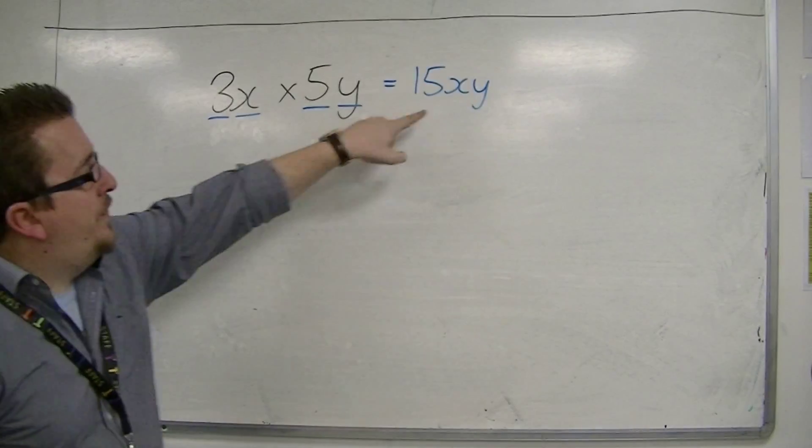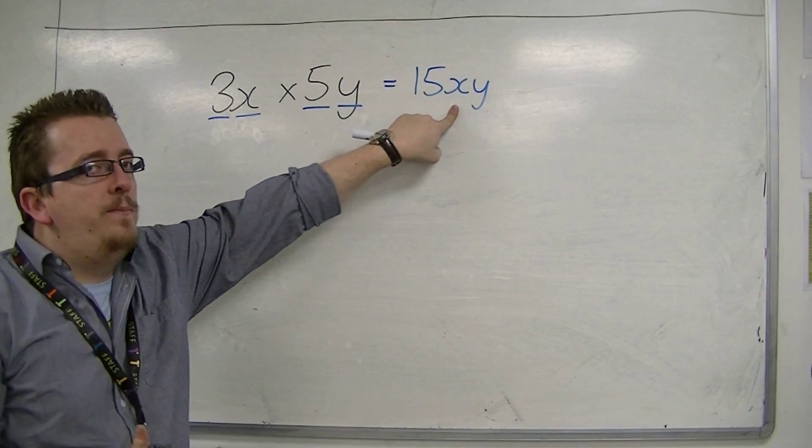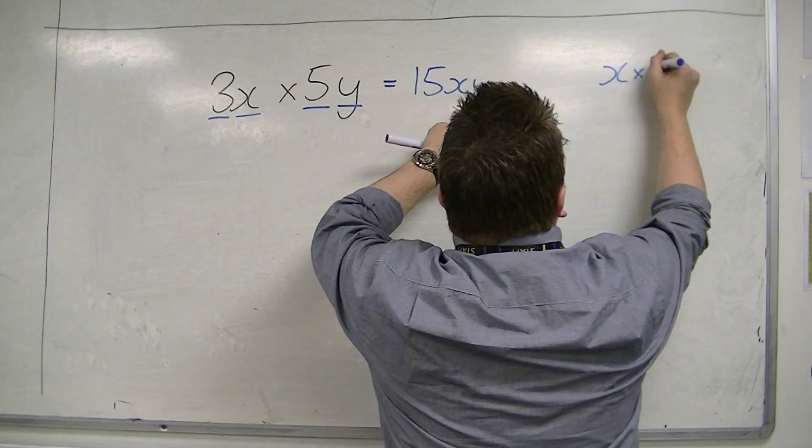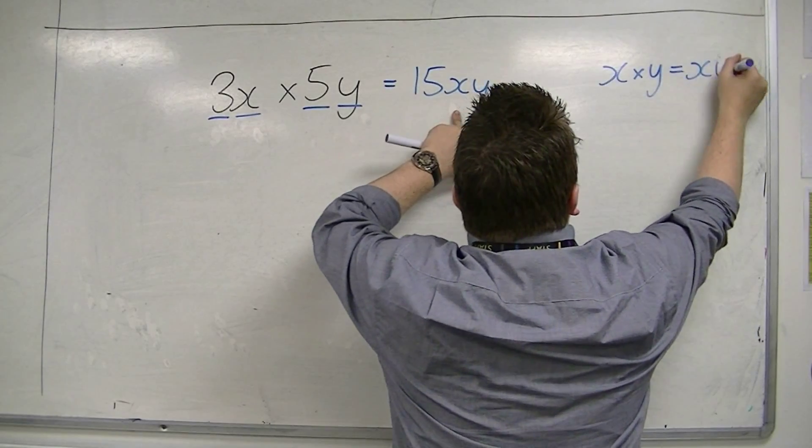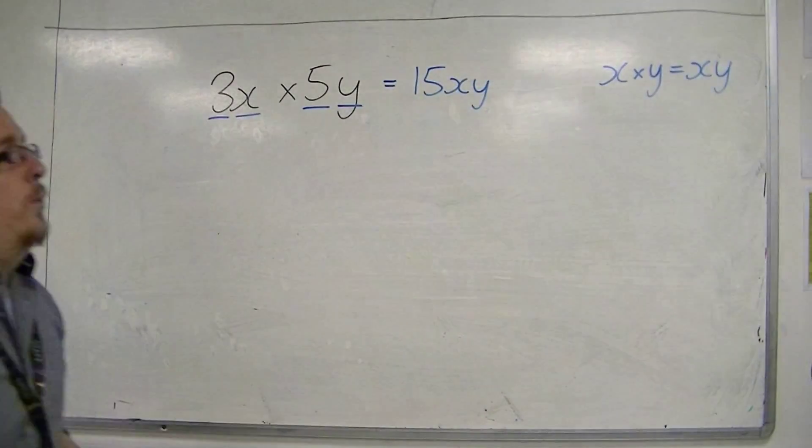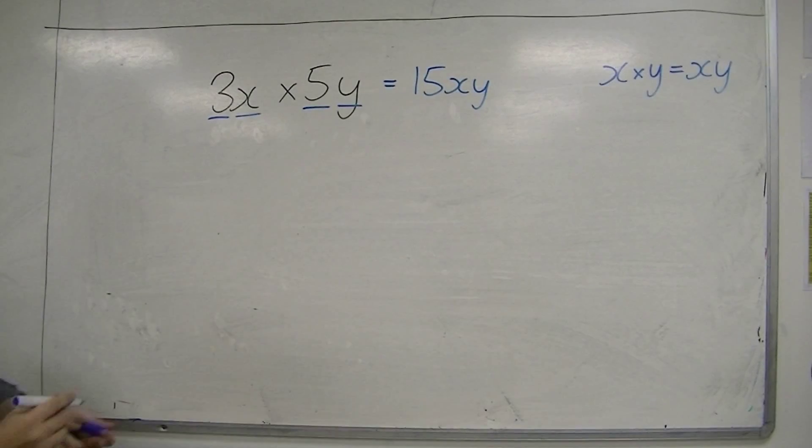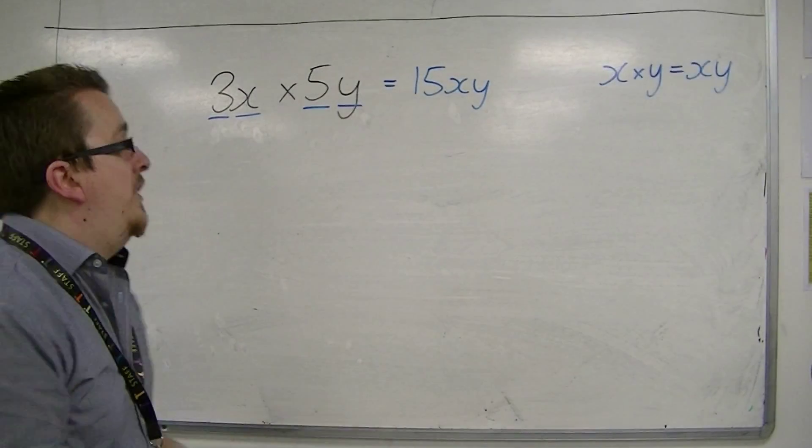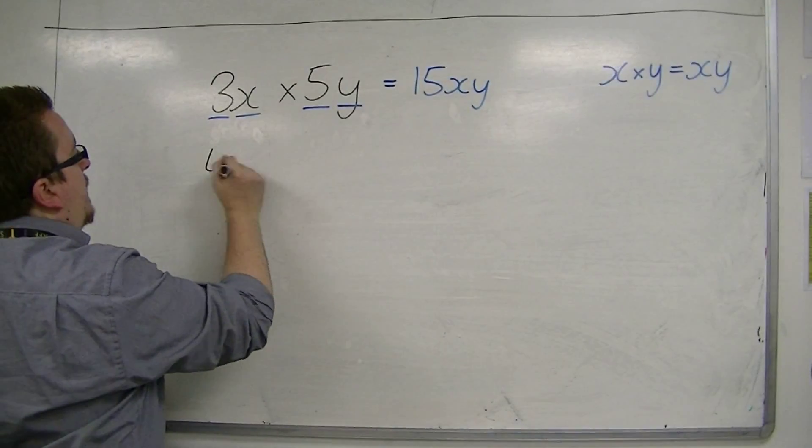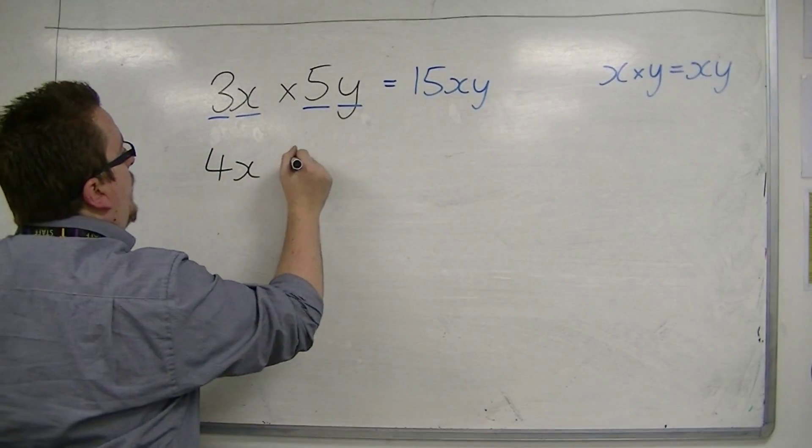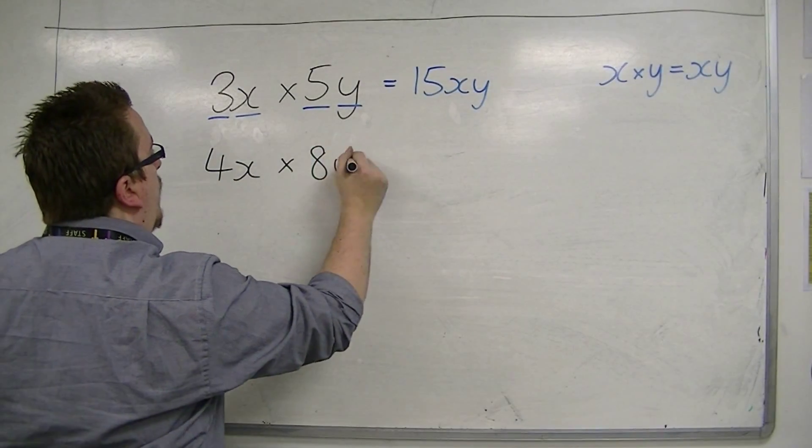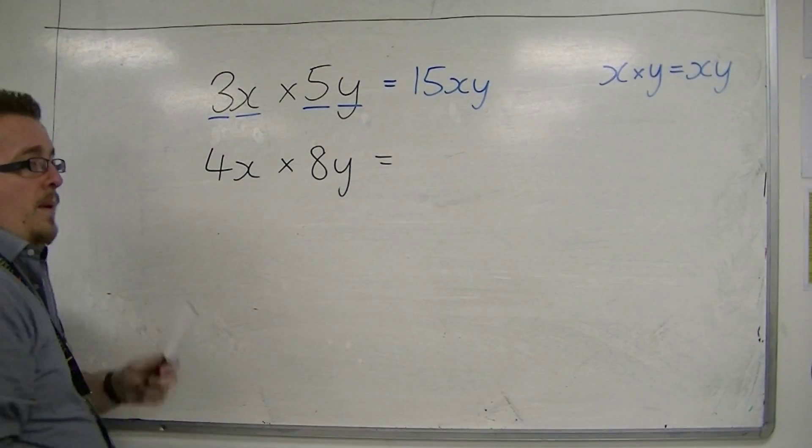And you can see that I don't bother writing the times sign in because if you multiply two letters together, then we can just write them as xy. So x times y is xy. So in a very similar example, we might have something like 4x times 8y. Very similar problem.